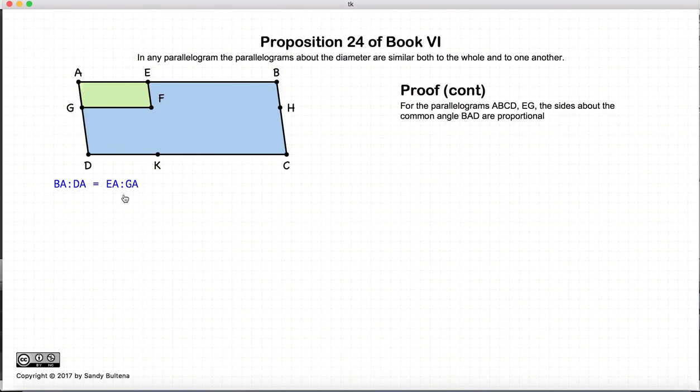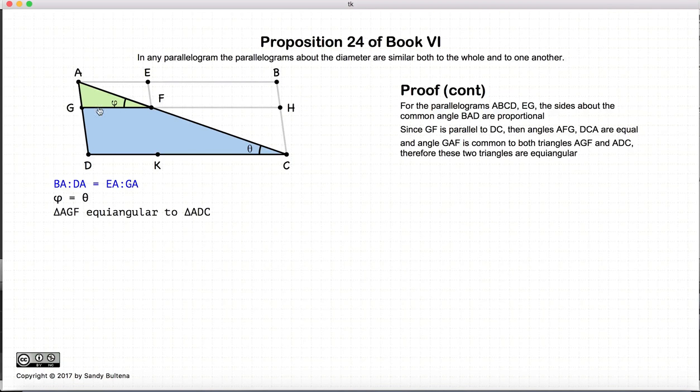So I've just redrawn everything and I've copied that final ratio right here. Continuing along with the proof, let's just look at the final thing that we did on the previous slide. We had that BA to DA is equal to EA to GA. So the sides about the common angle are proportional. Now since GF is parallel to DC, these angles are the same. So alpha is equal to gamma.